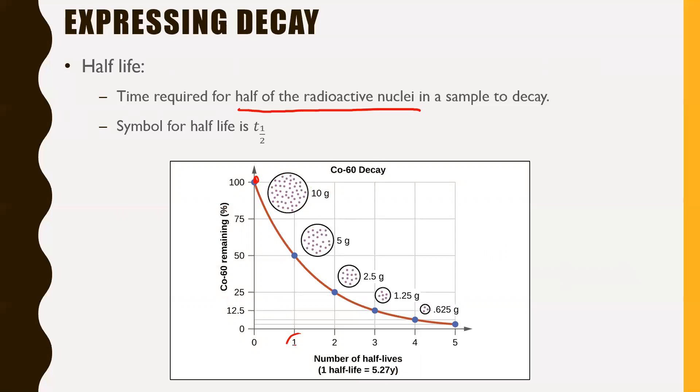After one half-life, which is 5.27 years, you only have five grams leftover, in other words 50%. After two half-lives, so after another 5.27 years, you have half of that leftover. So now you only have 2.5 grams, so 25% of what was originally had. And then after another half-life, you have half of that leftover, so 1.25 grams, so 12.5% of what you had left over, and so on and so forth.